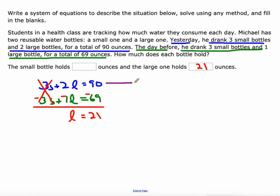All right, and then we could take either one of these equations. I'll take the top one because it doesn't have all those negative signs in it that I just added. And we'll do 3S plus 2L, but we now know that L is 21, so 2 times 21 equals 90. So 3S plus 42 equals 90. Subtract 42 from both sides. We get 3S equals 48 and divide both sides by 3. S equals 16, which means the small bottle holds 16 ounces. All right, so we set up two equations in standard form as opposed to the last one we did slope-intercept form, and then we use the combination method.